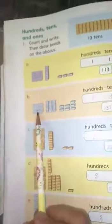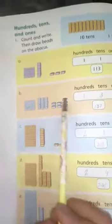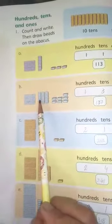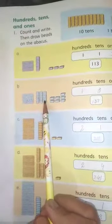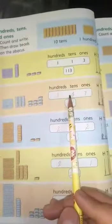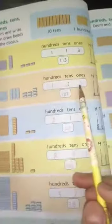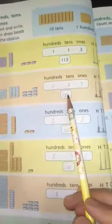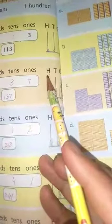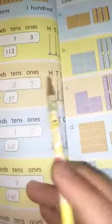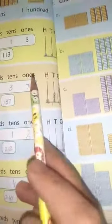Next B is 100, how many tens have? 1, 2, 3. 3 tens. Tens ke niche 3 likhenge. And ones kitnay hai? 1, 2, 3, 4, 5, 6, 7. 7 ones equals 137. Ab 100 mein, hundred mein hamne kitni beads draw karni hai? 1 bead draw karenge. And tens kitnay hai? 3 beads draw karenge. And ones? 7 beads draw karenge.